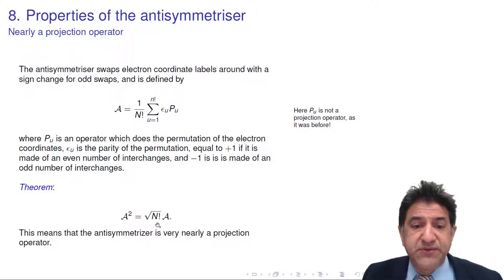it is the same as doing the antisymmetrizer once, except we have to multiply by the square root of n factorial. Now, if A squared was equal to A, A would be a projection operator. So this is very nearly a projection operator, essentially a projection operator except for a small factor, which is interesting.